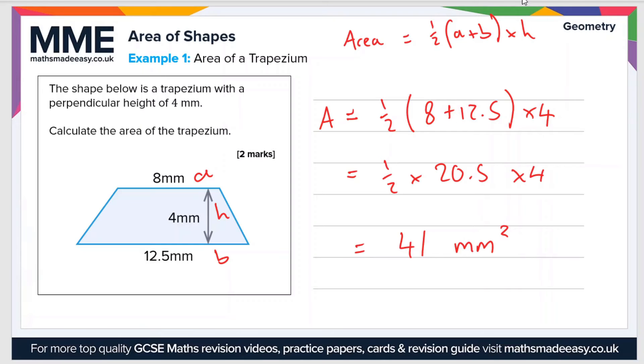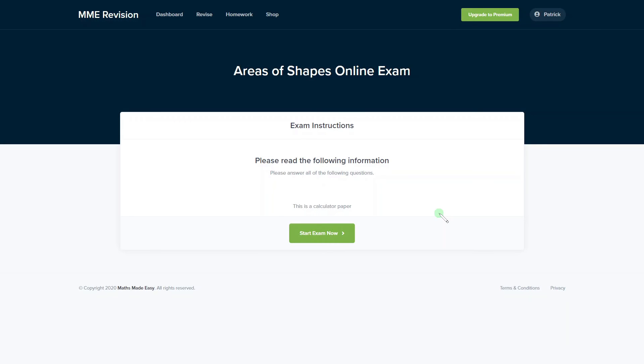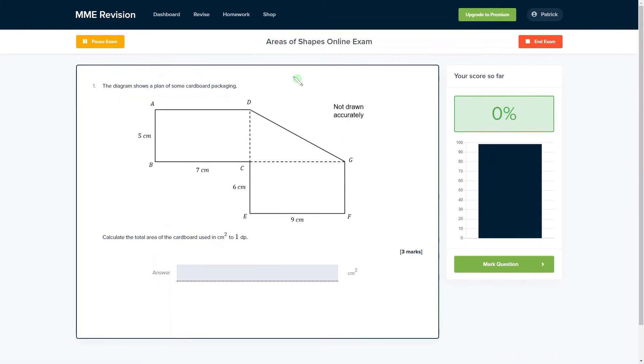If you'd like to get more practice with questions about the areas of shapes, we do have an online exam available. It's available through our revision platform. Here you'll find plenty of questions, a range of different question types so you get plenty of practice. You get instant feedback on each and every question, so this will allow you to keep track of the areas that you need to improve on. If you'd like to know more or take the exam, you can click the link below—it'll take you straight there.